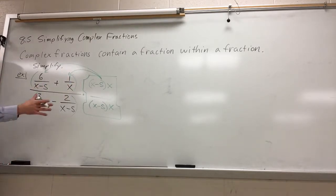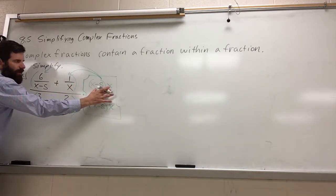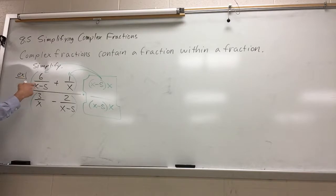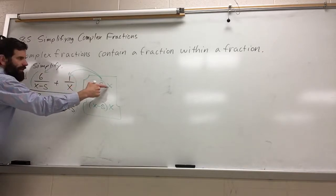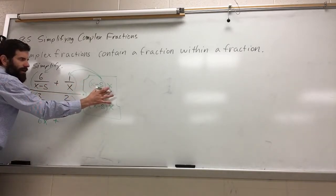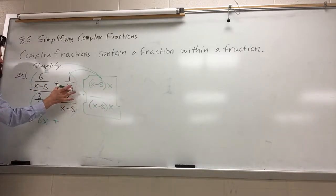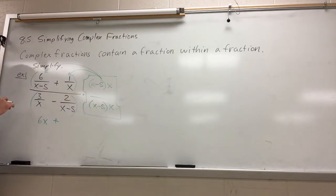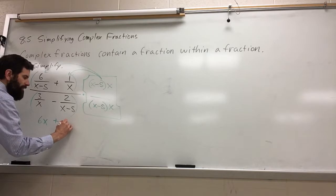Notice how this works. When the x minus 5 times x multiplies here, the x minus 5s divide out and you're left with a 6 and an x. When this x minus 5 times x multiplies with this 1 over x, the x's divide out and you're left with an x minus 5.